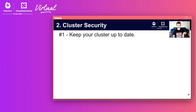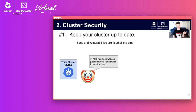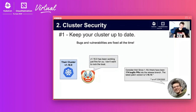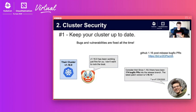Number one: keep your cluster up to date — bugs and vulnerabilities are fixed all the time. Since the 1.16.0 release, there have been 174 bug-fix PRs into that release branch, and the latest patch version is 1.16.14. You should be updating your cluster to the latest patch version at the very least. Updating the patch version should be minimally intrusive with no compatibility issues, and it is a very strong recommendation.